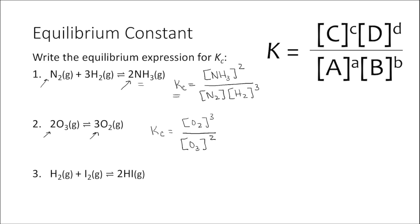For one last example, K sub C is equal to the concentration of the product HI squared, divided by the concentration of the reactants H2 times I2, because the coefficients in front of H2 and I2 are both 1.